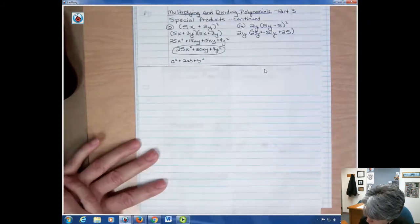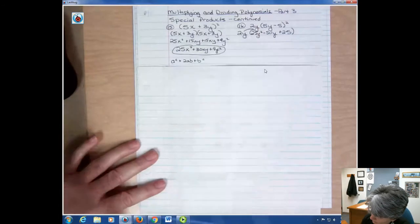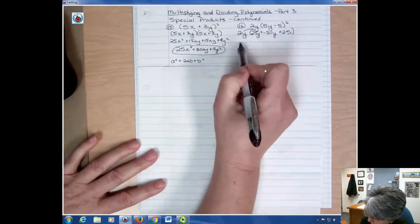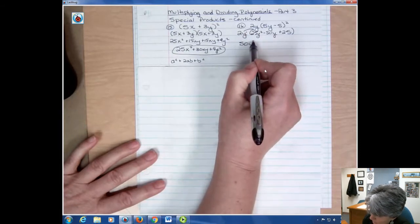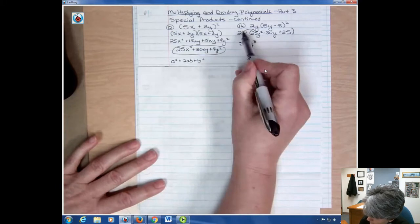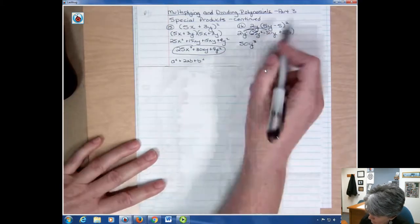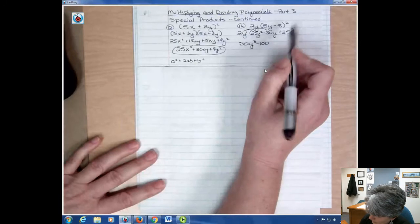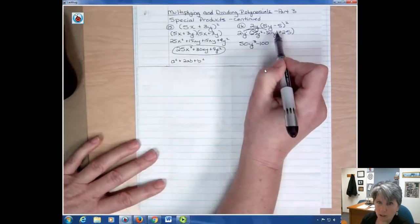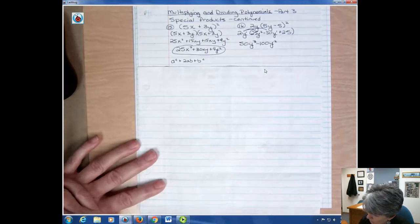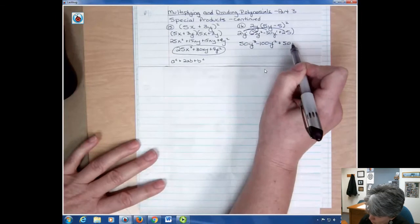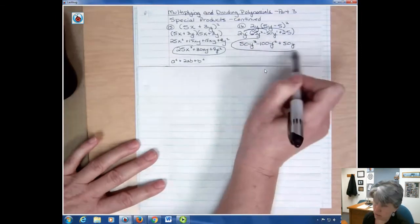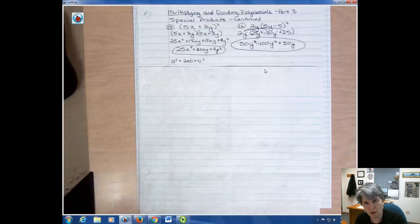And now that I've done that I'm going to distribute my monomial through there. 25 times 2 is 50. I have y to the first and y to the second. Add those together to get y to the third. And then I have 2y times negative 50y. 2 times negative 50 is negative 100. And 1 plus 1 gives me y squared. And then I have 2y times 25 which is 50. And then I have the y that's still on there. And then I'm finished. So I need to foil that out or multiply that binomial out and then distribute the two that was in front of it.